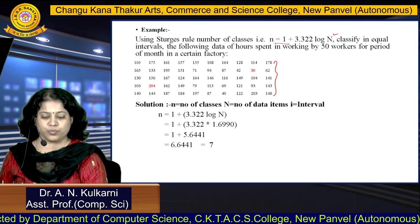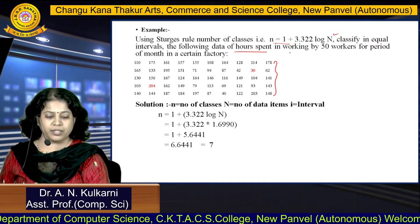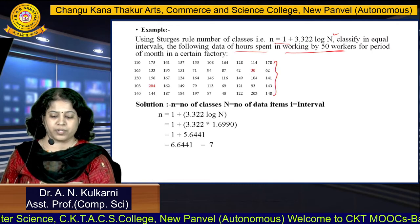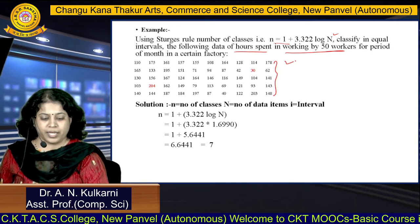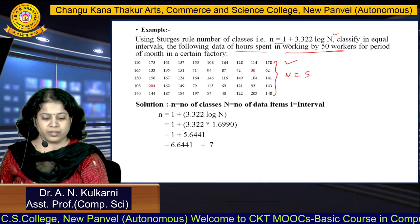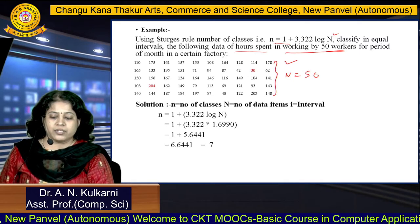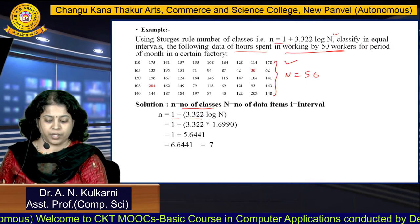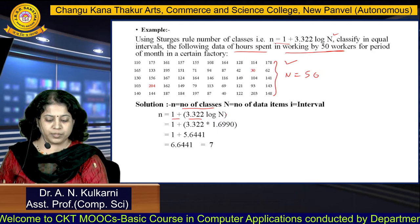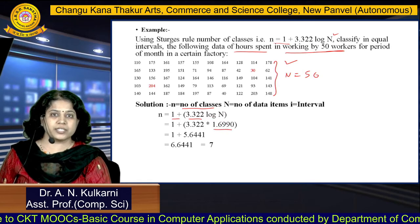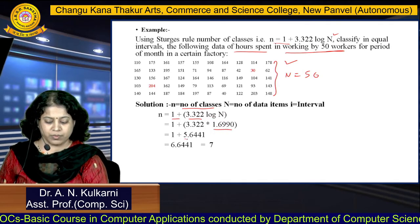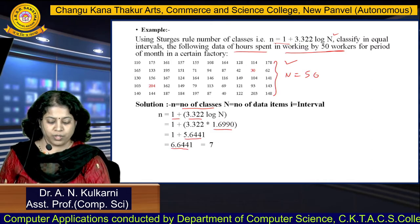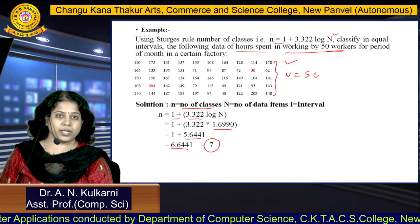Example: classify in equal intervals the following data of hours spent working by 50 workers. Here N = 50. Applying Sturges' rule: n = 1 + 3.322 × log 50. Log 50 = 1.6990, so 3.322 × 1.6990 = 5.6441. Adding 1 gives 6.64, which rounds to 7 classes.